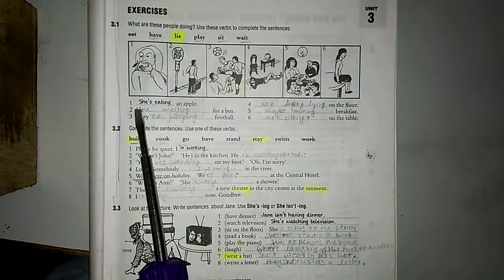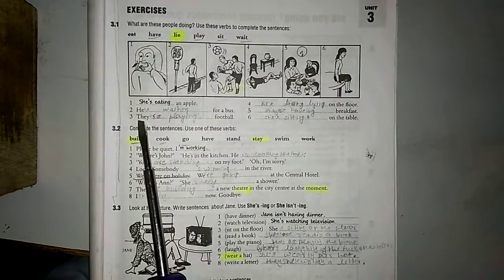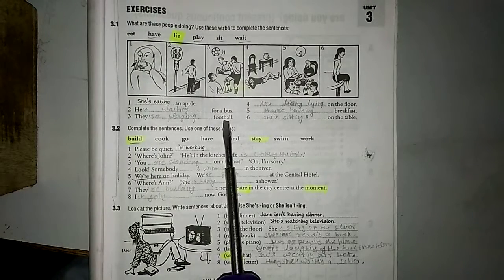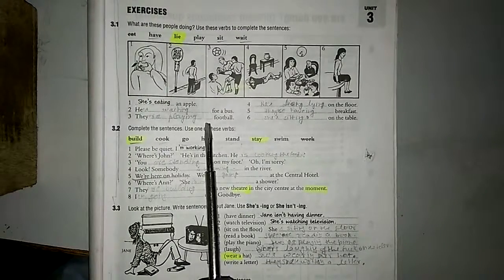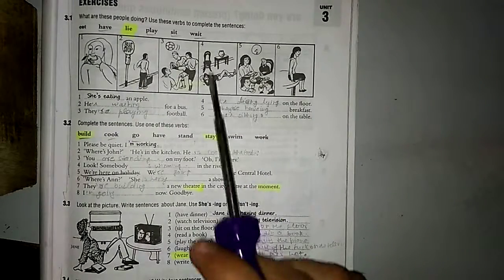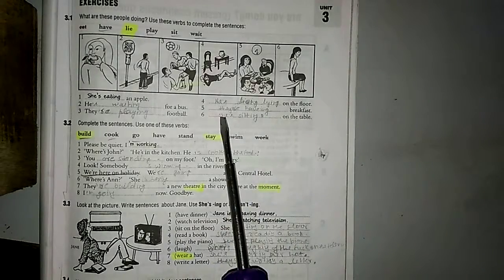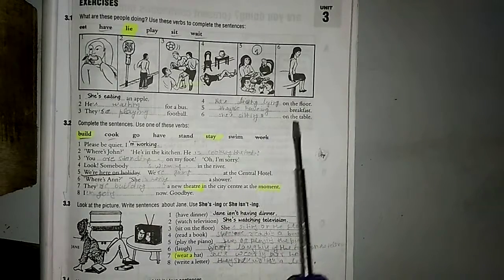She is eating an apple. She is eating an apple. I was waiting for the bus. I was waiting for the bus. He is waiting for the bus. I am waiting for the bus. They are playing football. He is lying on the floor. He is having dinner, breakfast. She is sitting on the table.